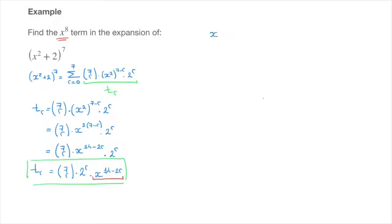x to the power of 14 minus 2r has to equal x to the power of 8, which is the power of x we're trying to find. This equation is an exponential equation.